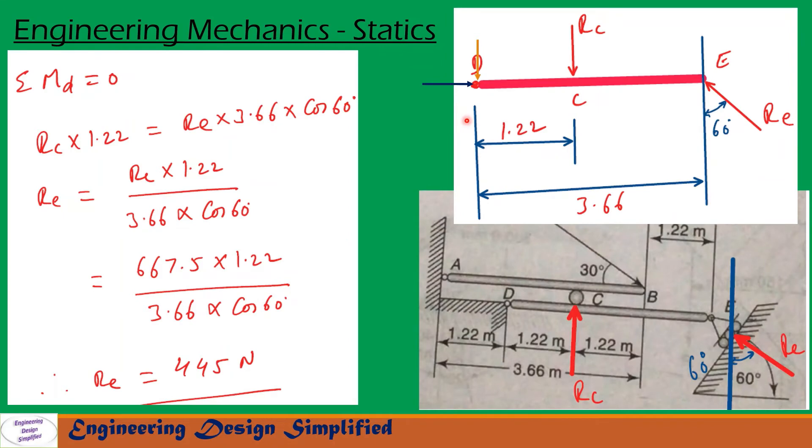Now let us see free body diagram of member DE. So on this member at C, there is a reaction RC acting vertically downwards at a distance 1.22 from D. So 1.22 is given in the problem here. Since on member AB, RC is acting vertically upwards, so on member DE, it will be acting vertically downwards. That is shown here.